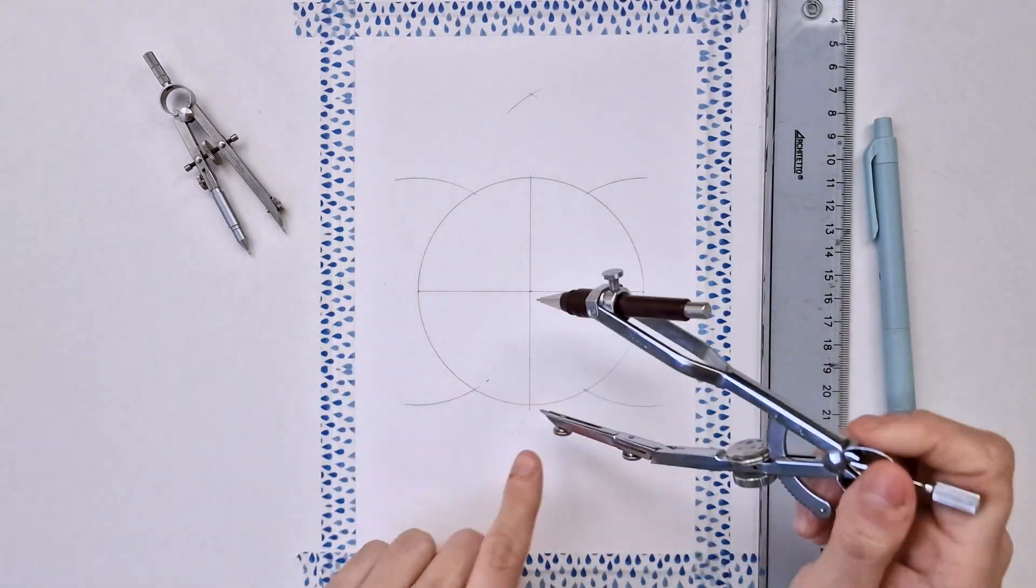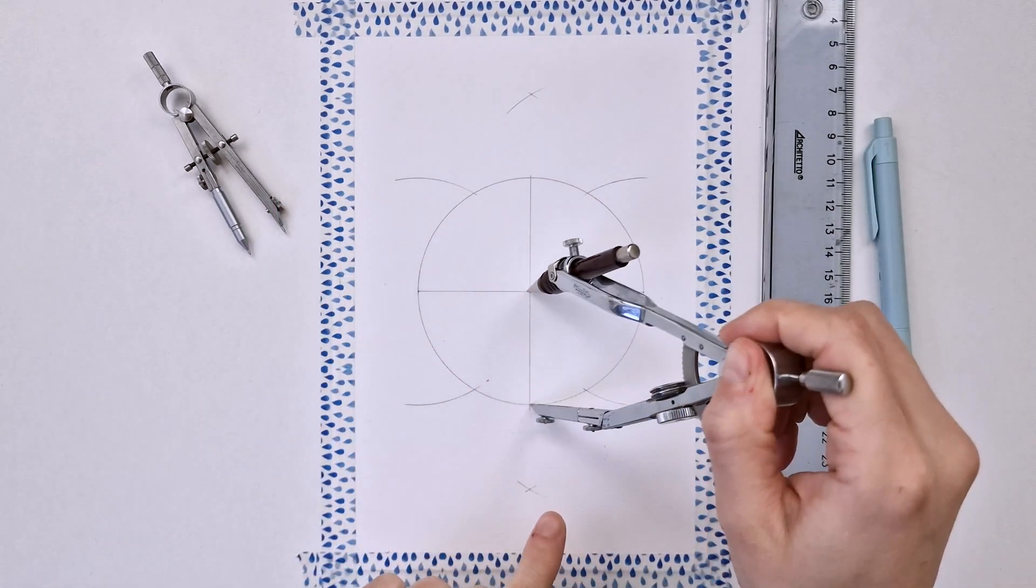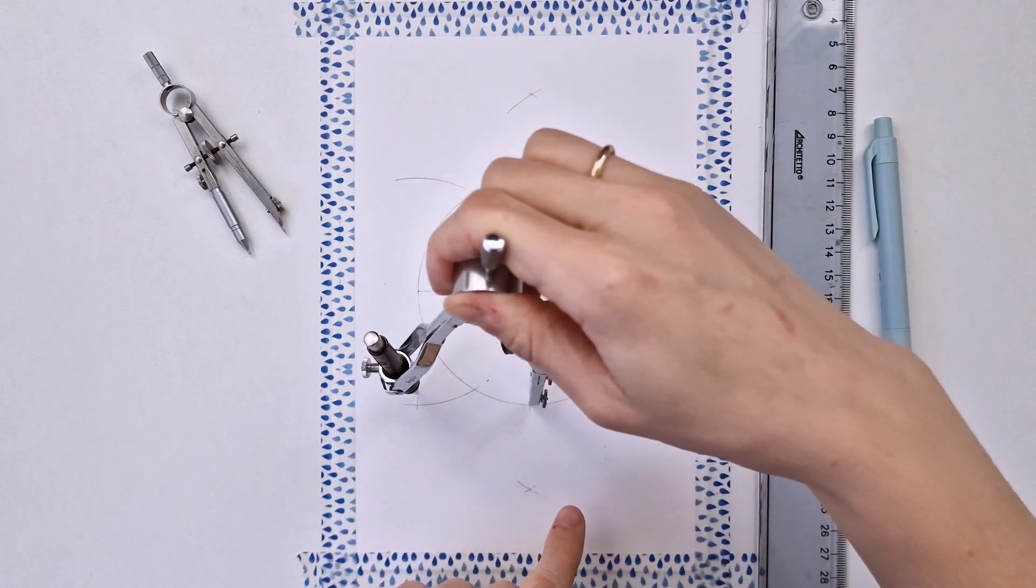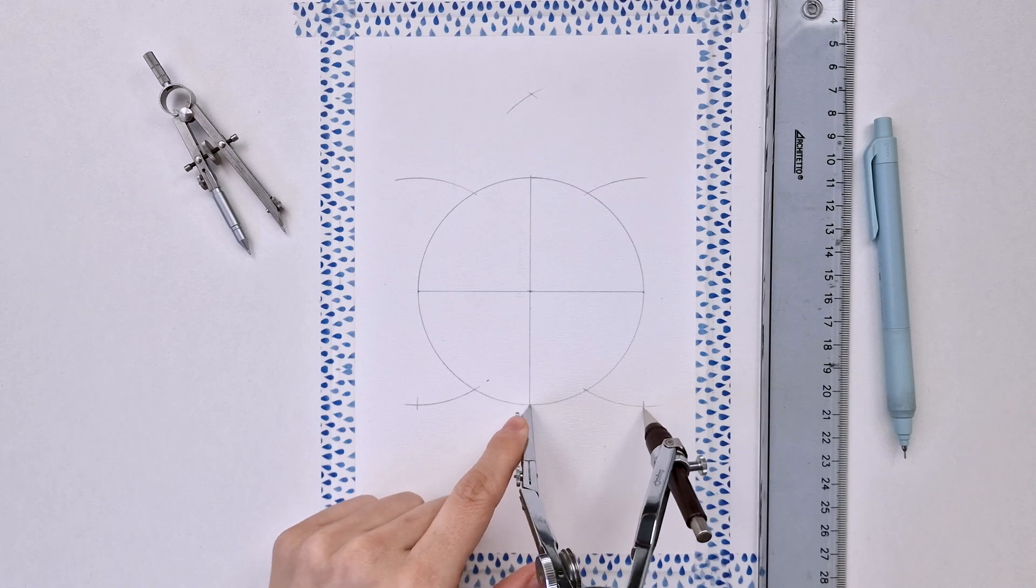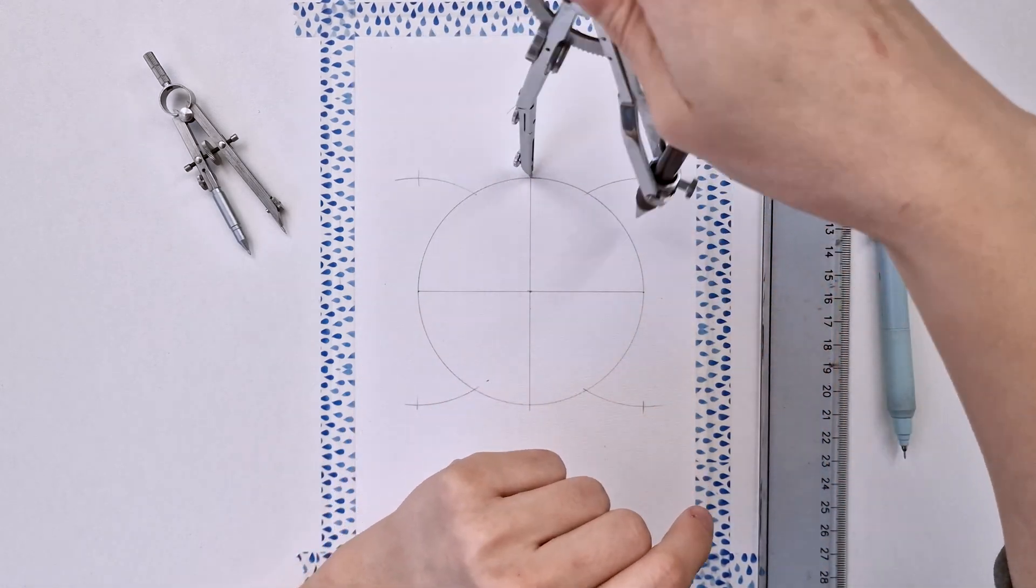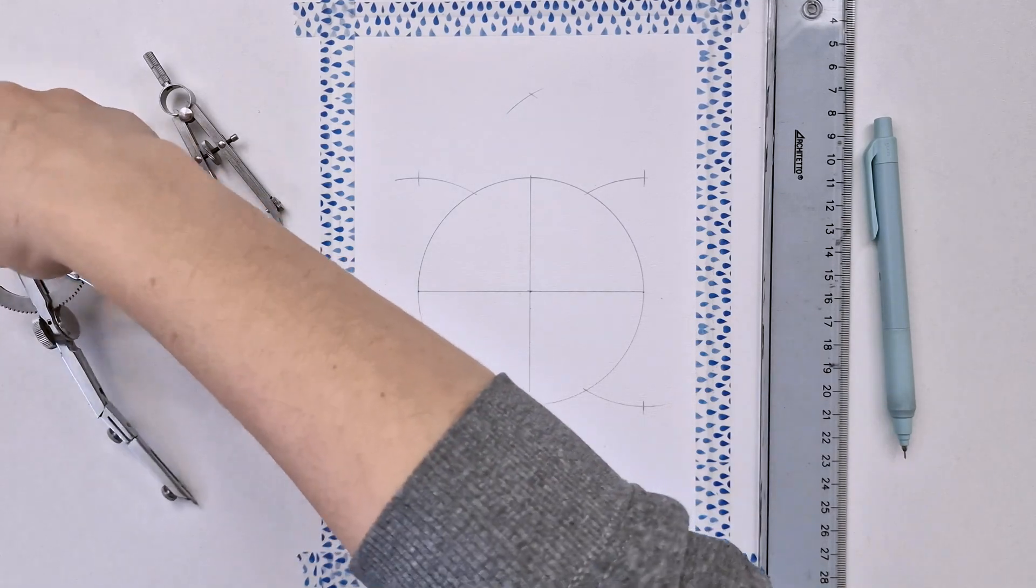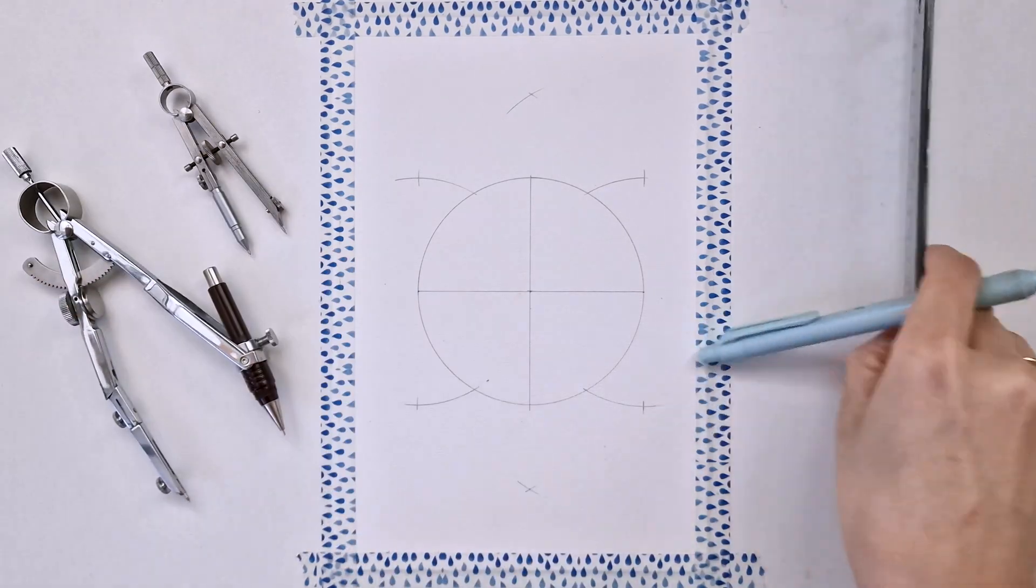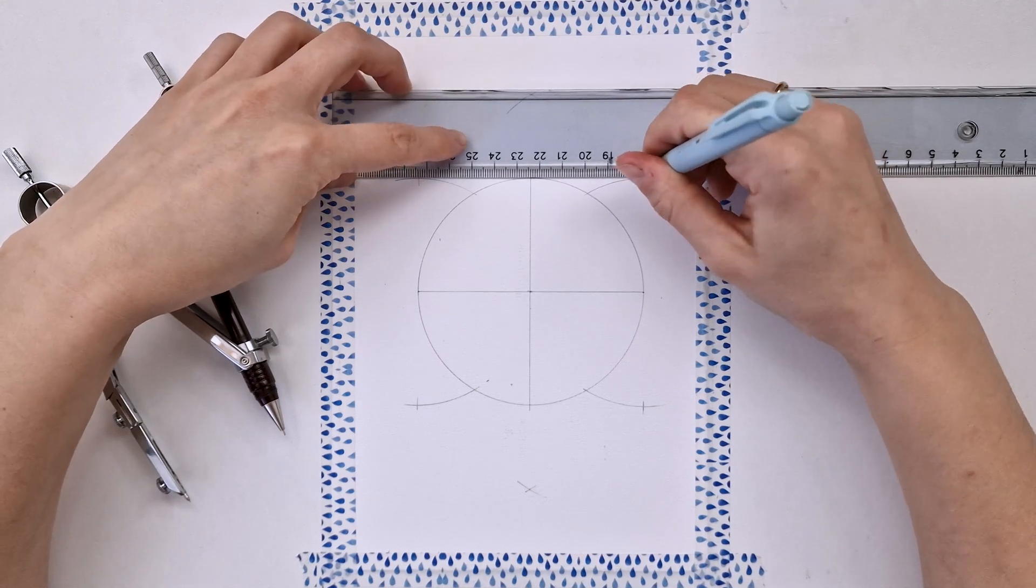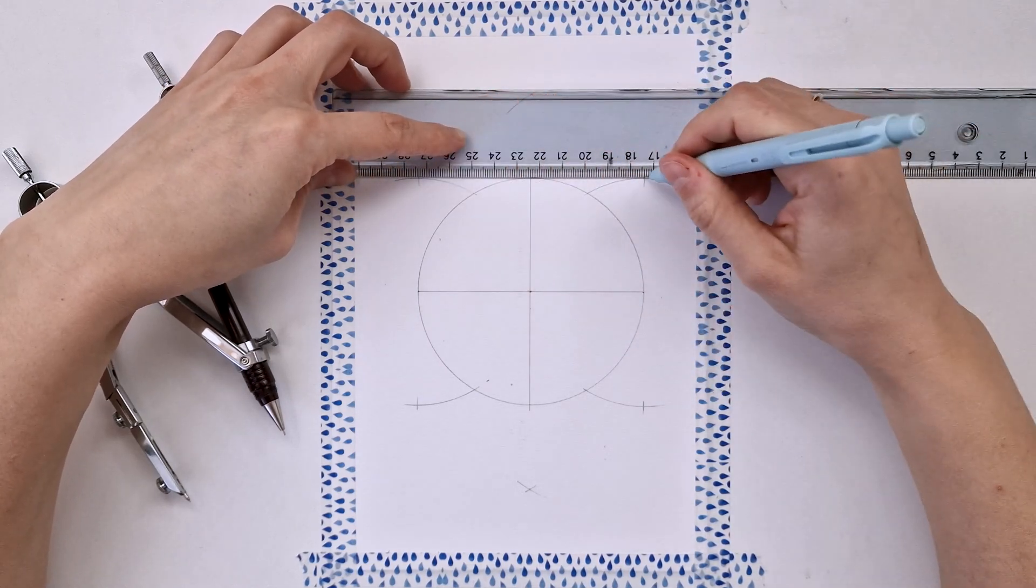Now let's go back to our initial radius and pointing my compass at this new intersection, let's draw another two marks at the bottom and two at the top intersecting the previously drawn marks. I'll need those intersections to draw a square around the circle.